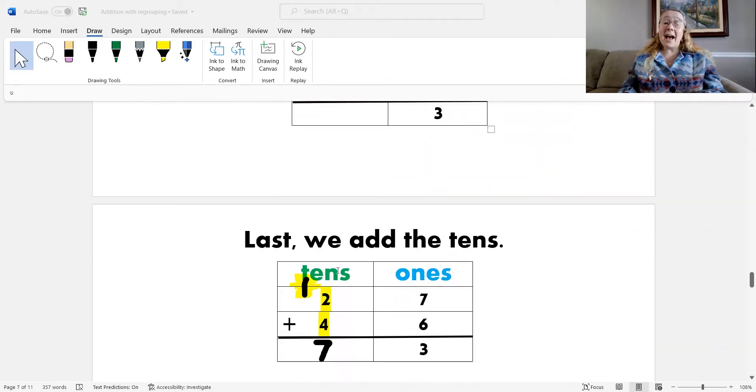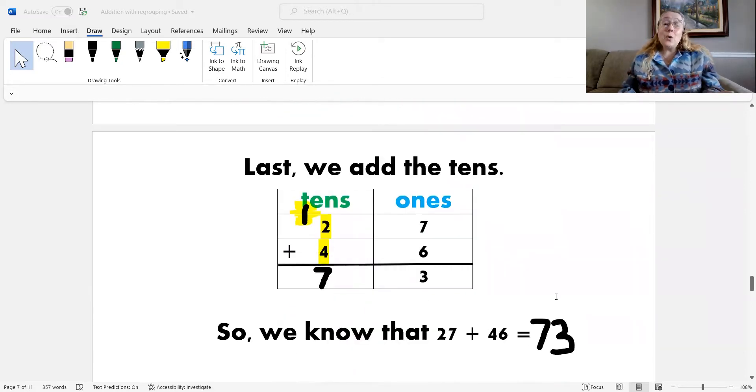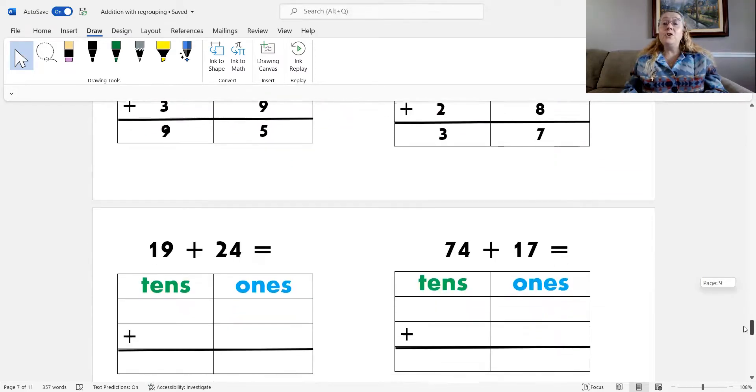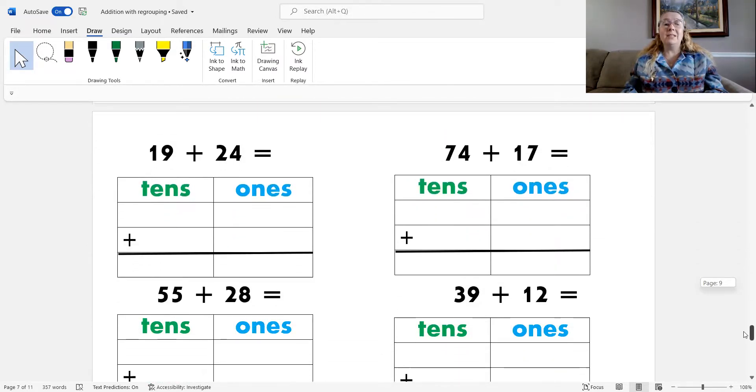Then, we add the tens. So, we know that 27 plus 46 equals 73. Let's try to solve a few more problems today. Okay, here's our first one.